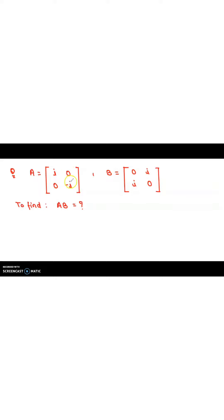Clearly we can see that this is a two-by-two matrix. Why is it a two-by-two matrix? The order is two because we have two rows and two columns. The first number indicates the number of rows and the second indicates the number of columns. So two rows and two columns means the order is two-by-two. Matrix B is also two-by-two.